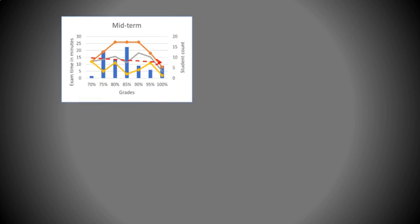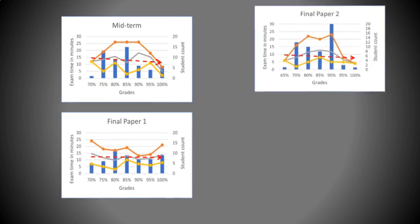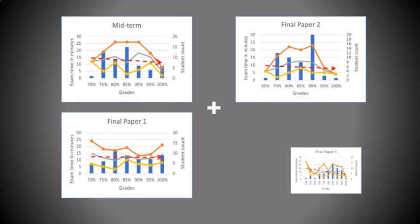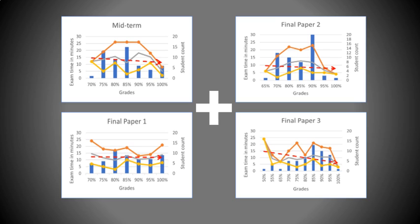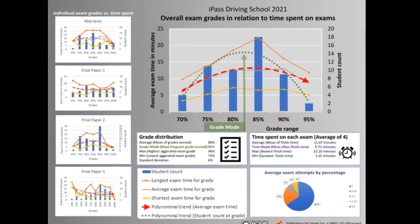We put four of these charts together, showing the timing and the grades for each of the four exam papers. Each gave us slightly different trends. They showed that as students progressed with each exam, they got better timing results, indicating that they were getting used to the LMS technology. By combining the results of the four exams into one big chart, the correlation becomes clearer.